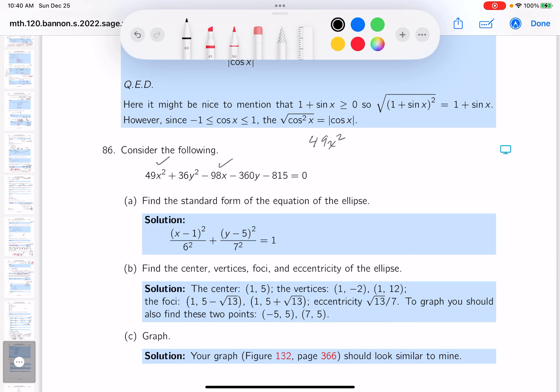I've got this part, minus 98x. I think I put plus 36y squared. I've got this, minus 360. And then I'm going to take the number, put it to the side, 815.